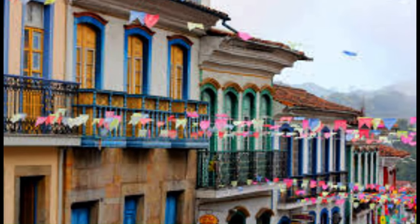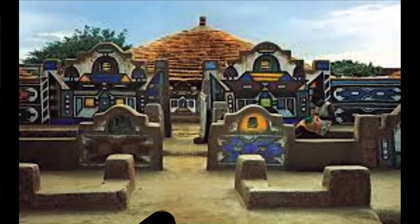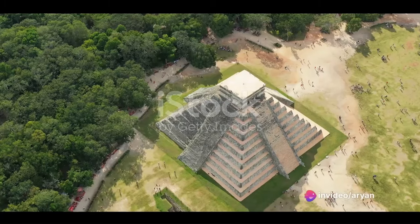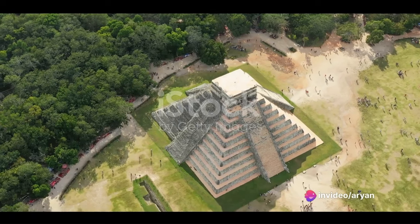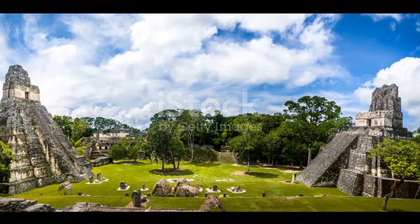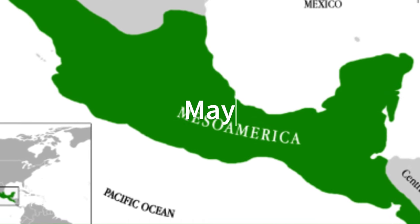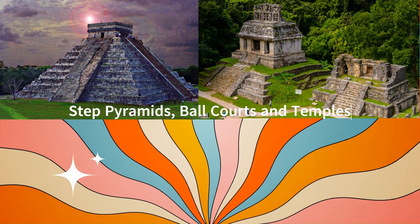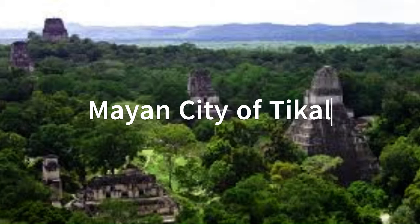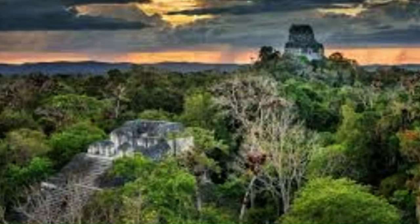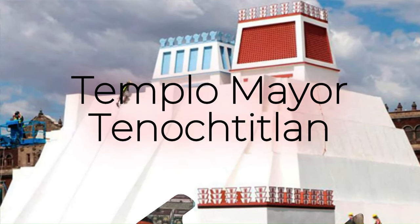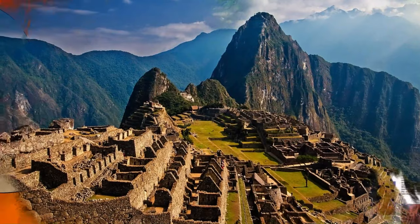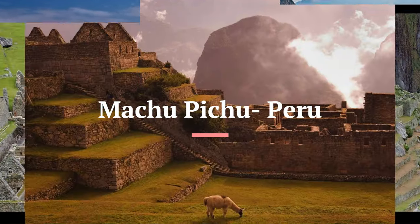Pre-Columbian American architecture encompasses a vast and diverse array of architectural styles, reflecting the ingenuity and cultural richness of indigenous civilizations across the Americas before the arrival of Columbus. In Mesoamerica, civilizations like the Maya, Aztec, and Zapotec created monumental structures including step pyramids, temples, and ball courts. The Mayan city of Tikal featured iconic temples rising above the dense jungle canopy, while the Aztecs built the Templo Mayor at the heart of Tenochtitlan, present-day Mexico City. In the Andean region, the Inca Empire left its mark with intricate stone constructions like Machu Picchu, a marvel of precision stone masonry and agricultural engineering.